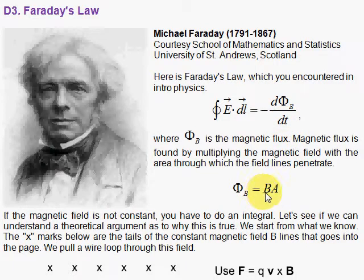And if the magnetic field is constant, we take B times A, assuming that B pierces the area, that it's perpendicular to the area. So that is Faraday's Law.